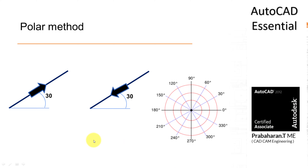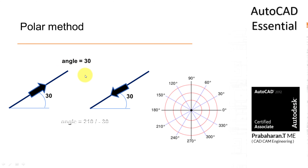Similarly, if you draw a line at 30 degree, moving the line from bottom to top, the exact angle is 30 degree. The reverse of this 30 is 210 degree or minus 30 degree — we can give either.